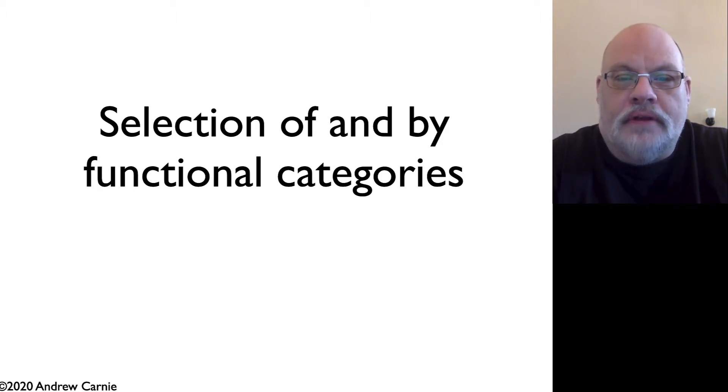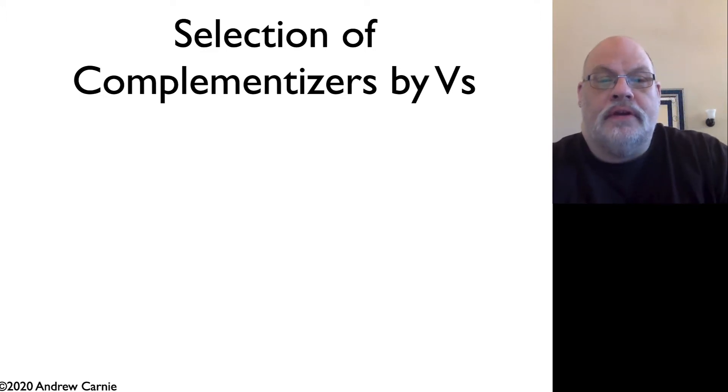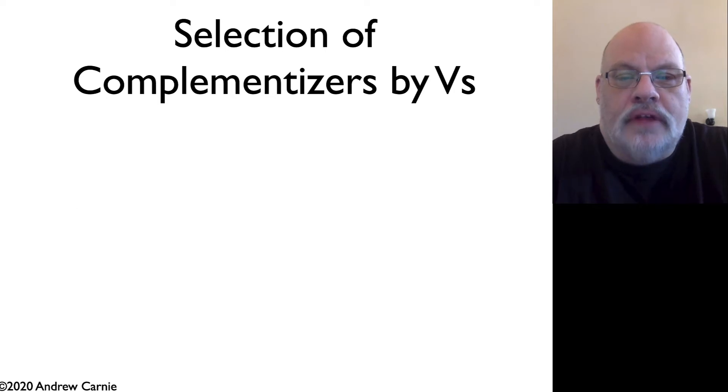So in this particular video, we're going to talk about the selection of and by functional categories. In particular, the selection of complementizers, the selection by complementizers of TPs, and the selection of determiners for other determiners and noun phrases. So let's start off by talking about the selection of particular complementizers by particular verbs.